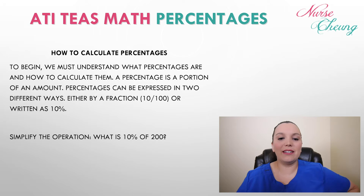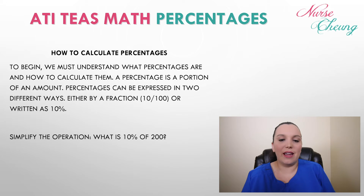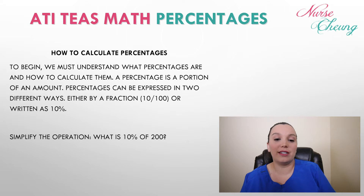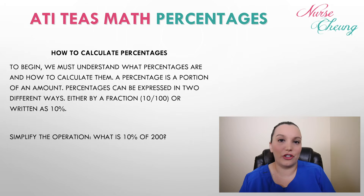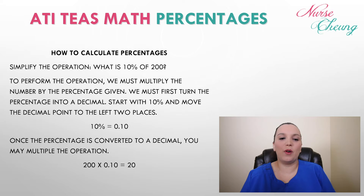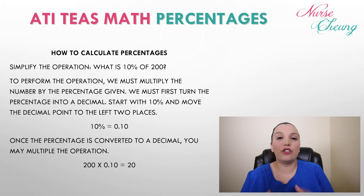We must understand what percentages are and how to calculate them. A percentage is a portion of an amount. Percentages can be expressed in two different ways — as a fraction, say 10 over 100, or as 10%. So let's simplify an expression: what is 10% of 200? In order to perform this operation, we must multiply the number by the percentage given, but we must first turn the percentage into a decimal.